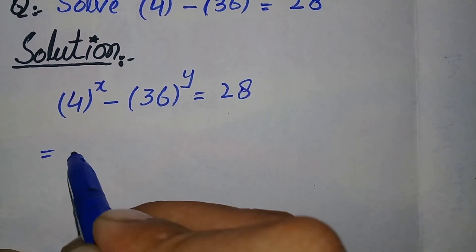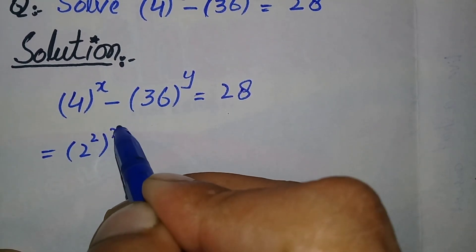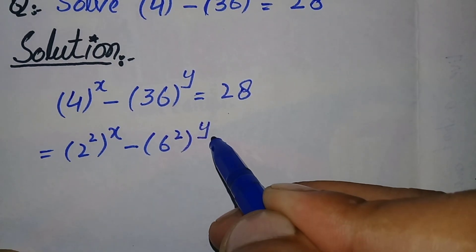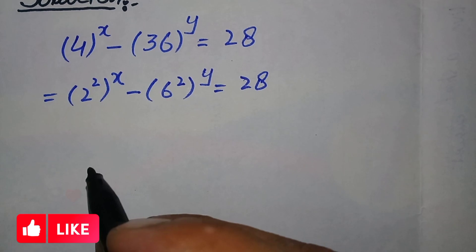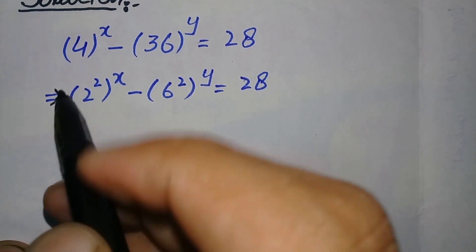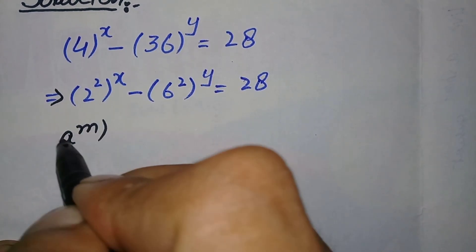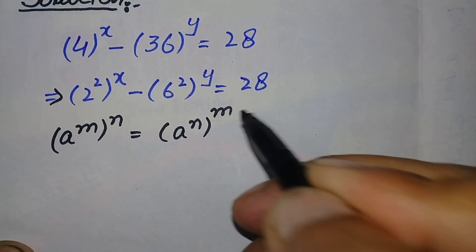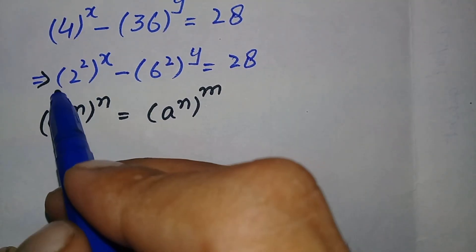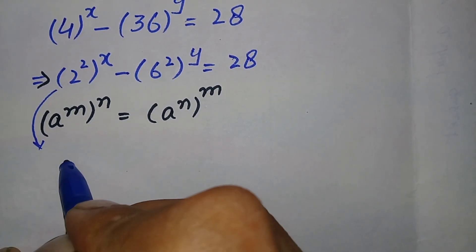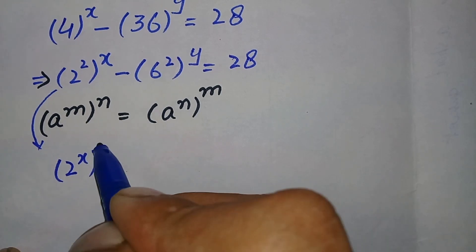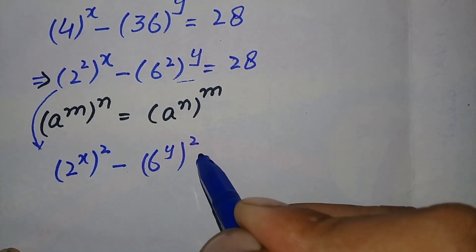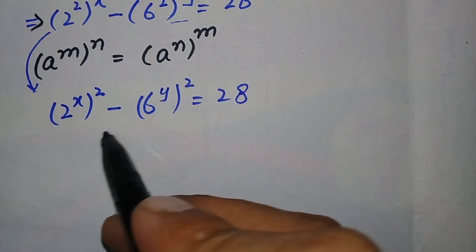We can write 4 as 2 raised to power 2, so it becomes (2²)^x, and 36 can be written as 6 squared, so it becomes (6²)^y, equal to 28. In the next step we use the exponential formula: a raised to power m, raised to power n, can also be written as a raised to power n, whole raised to power m. Using this formula, the equation becomes 2 raised to power x, whole squared, minus 6 raised to power y, whole squared, equal to 28.